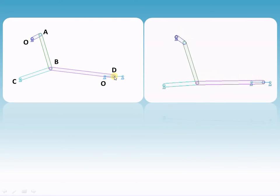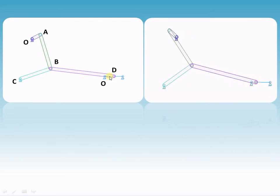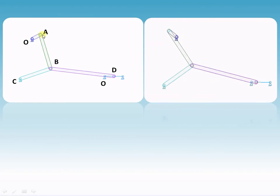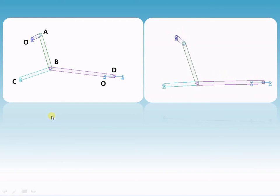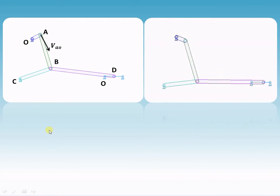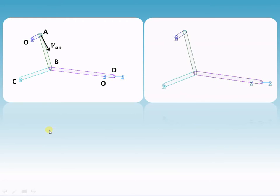Now we know that as OA is rotating in the clockwise direction, the velocity of A with respect to O will be perpendicular to the link and in the direction of rotation.